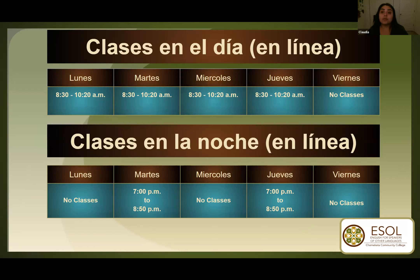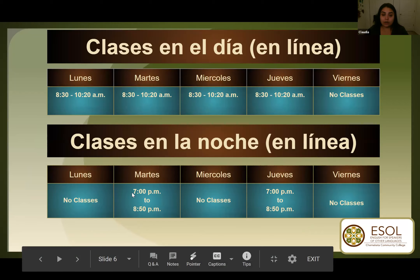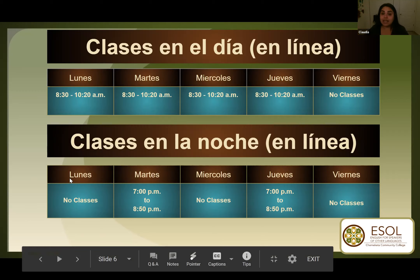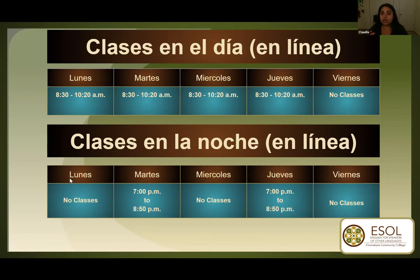Ofrecemos clases en el día que son de multinivel — puede ser principiante, intermedio, avanzado. Ofrecemos clases de lunes a jueves de las 8 y media a las 10 y 20. Todas las clases van a ser en línea por un programa que se llama Zoom. En la noche, ofrecemos clases de las 7 a las 8 y 50 de la noche, los martes y jueves. Ofrecemos dos clases en ese horario: la primera clase es para los principiantes de nivel A1-A2 y la otra es para el nivel intermedio de B1 más avanzado. Tú puedes elegir asistir las de la noche, las del día, o ambas si tienes el tiempo para dedicarte a tus estudios, pero van a ser con diferentes instructores.